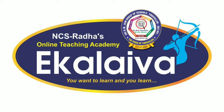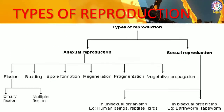I've classified the types of reproduction into two categories: asexual reproduction and sexual reproduction. In asexual reproduction you can see many subheadings that we are going to discuss one after the other. Here I will just introduce what each one means. The first one is fission — fission simply means division.